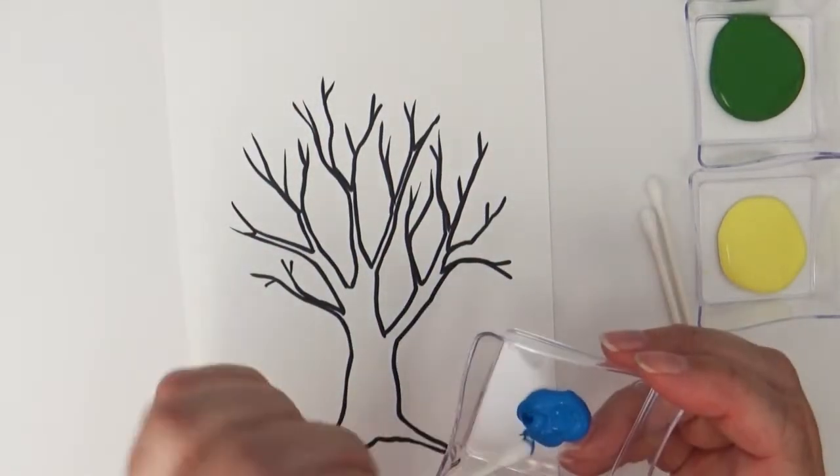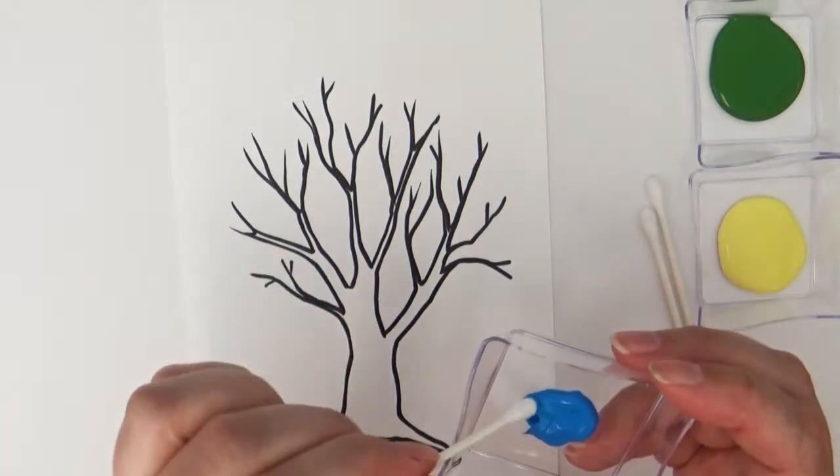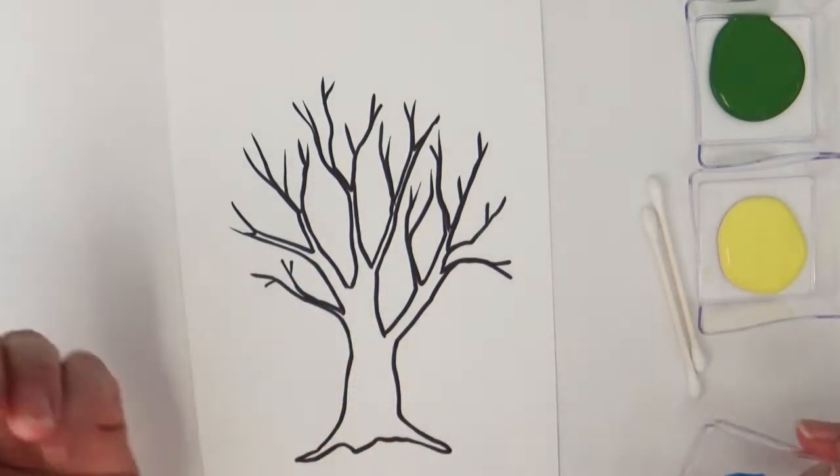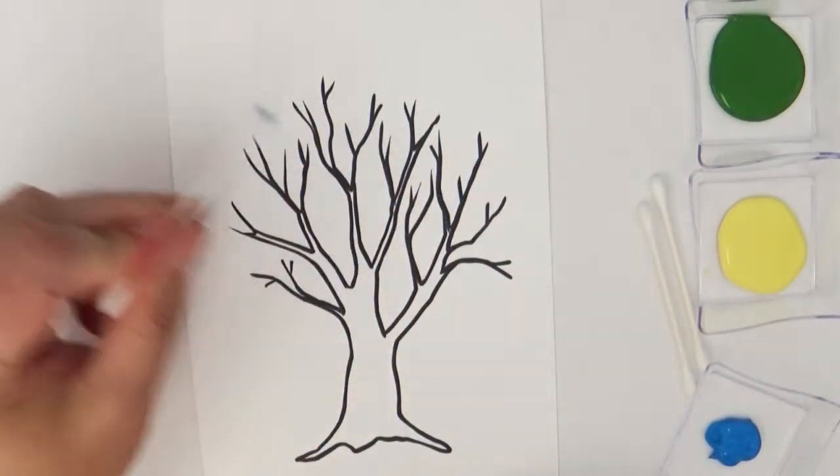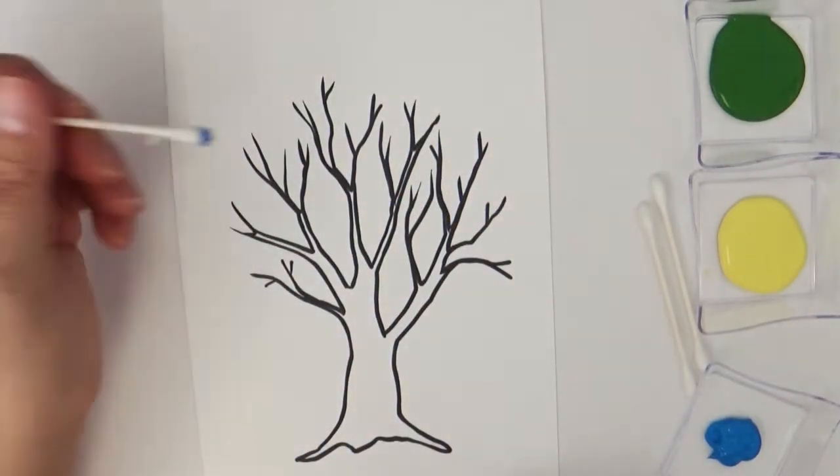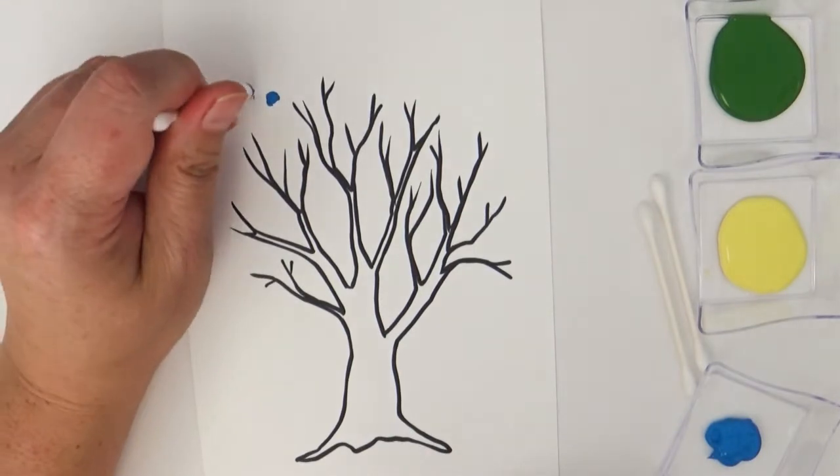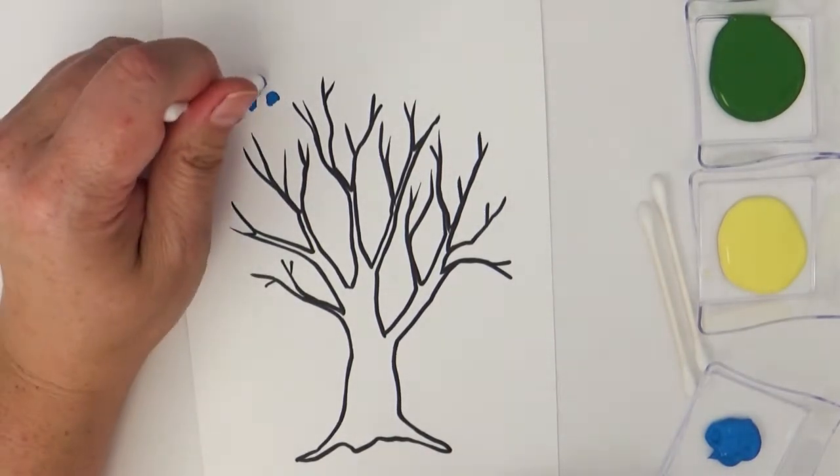You'll also have three or four different containers of paint. Now this is acrylic paint so you don't want to get it on your clothes but it will wash off your hands. Also you'll find a handful of q-tips. Instead of paint brushes we're going to use these q-tips to create small little dots to make our picture.